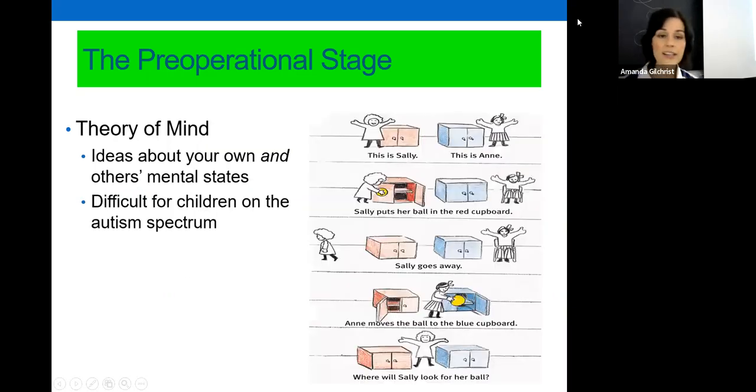So one thing that relates to egocentrism is this notion of theory of mind. Theory of mind is basically the idea that other people don't necessarily always have the same information that you have. Other people may not have the knowledge that you have. So imagine that I brought you a box of crayons and you open up the box of crayons and inside I have put candles, because I'm pranking you.